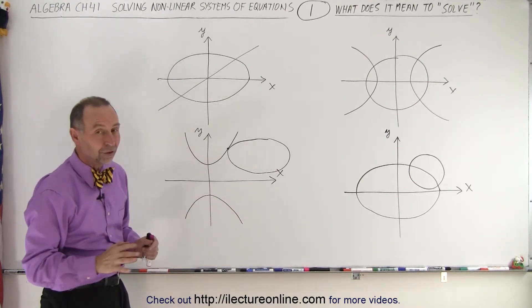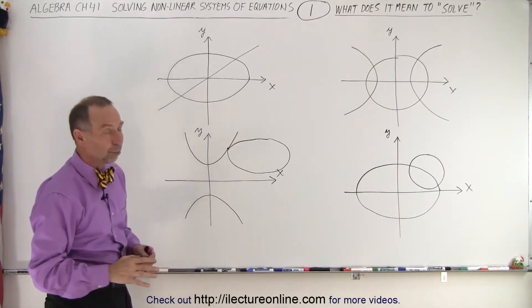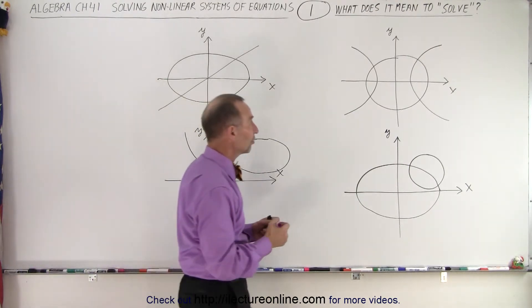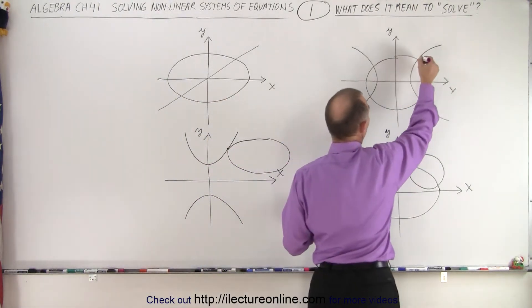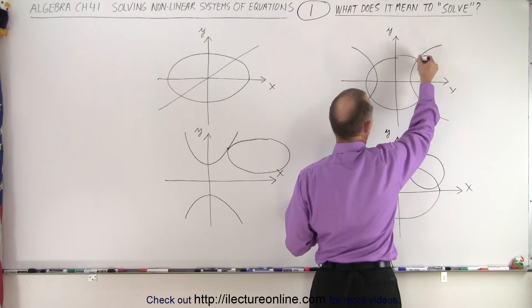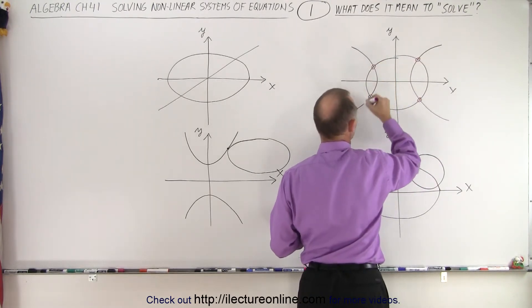Notice that in all cases there are some intersections between the graphs of these functions. We can see that the hyperbola and the circle cross over here, here, here, and here.